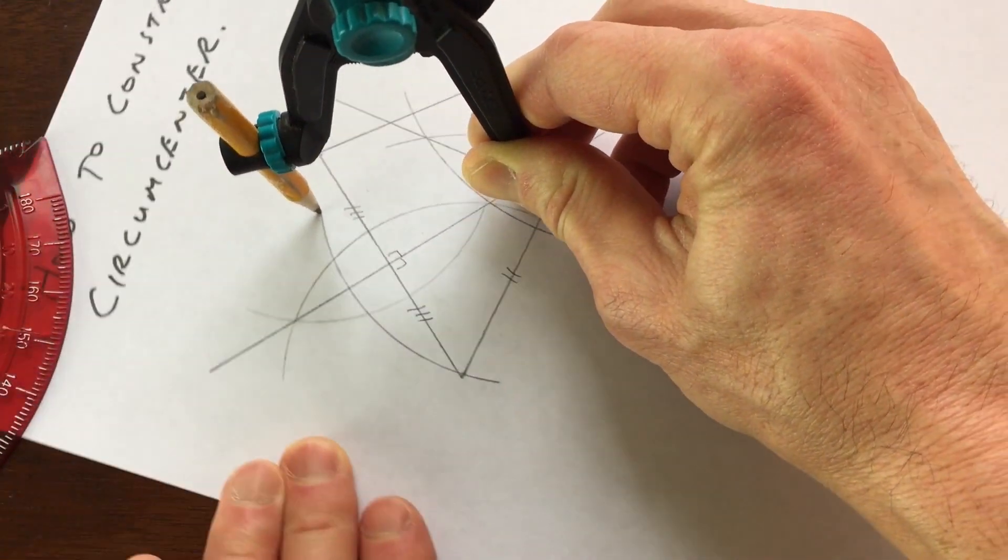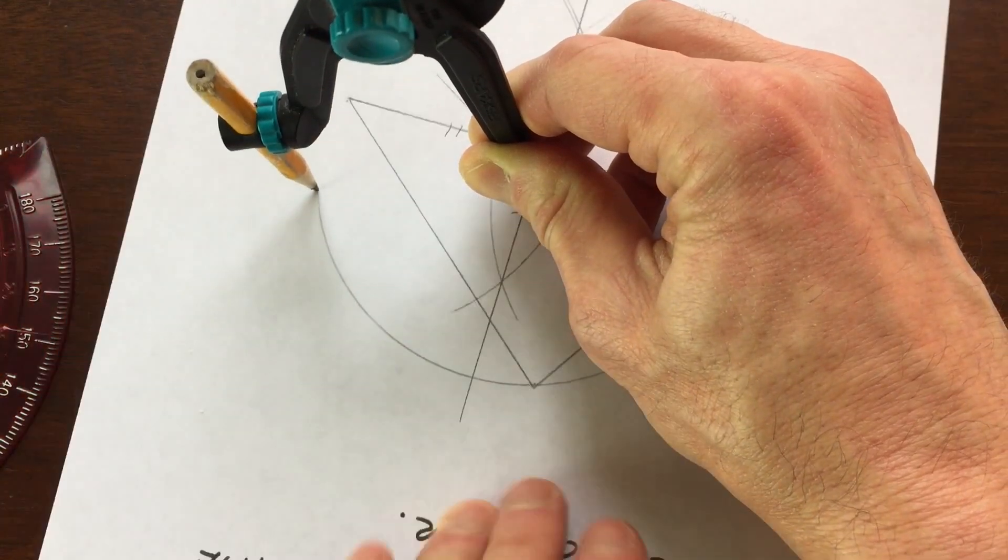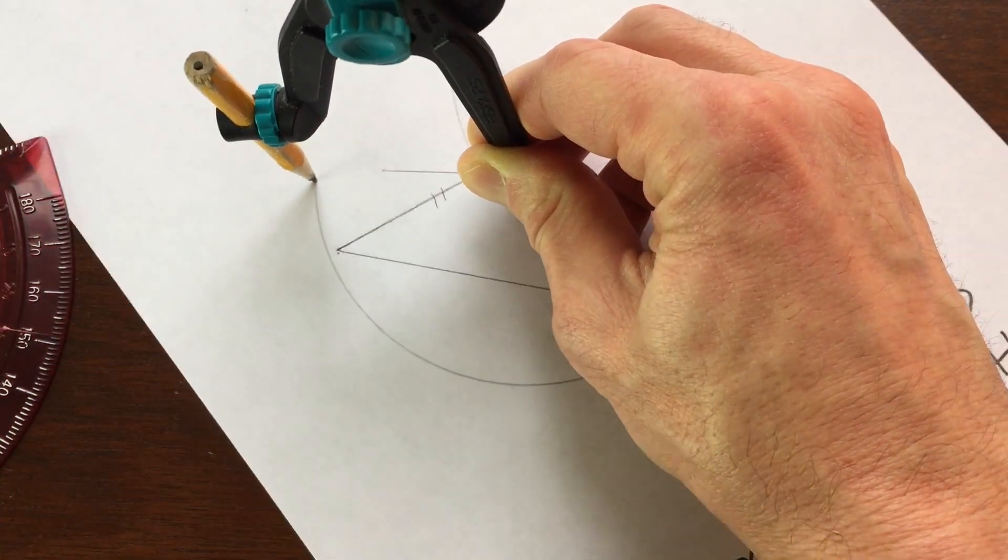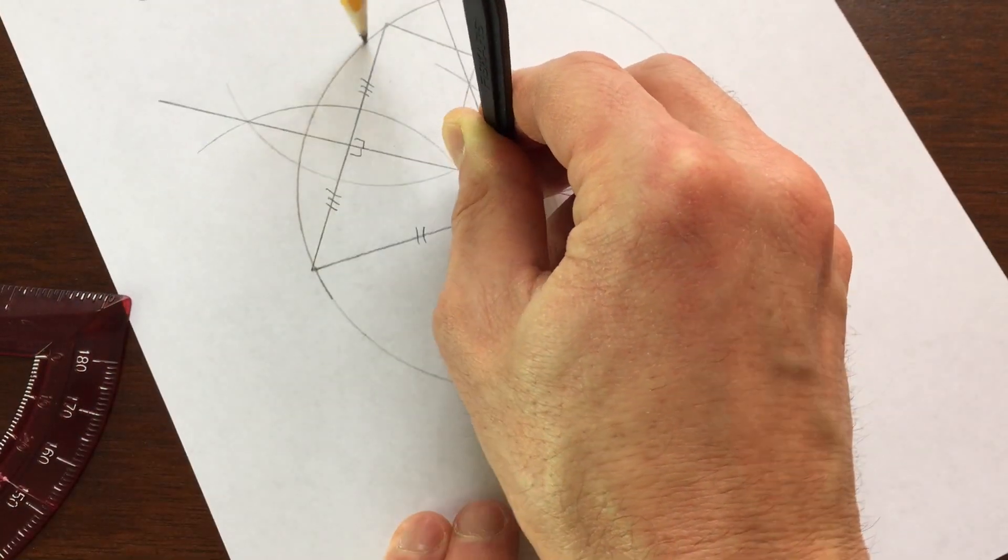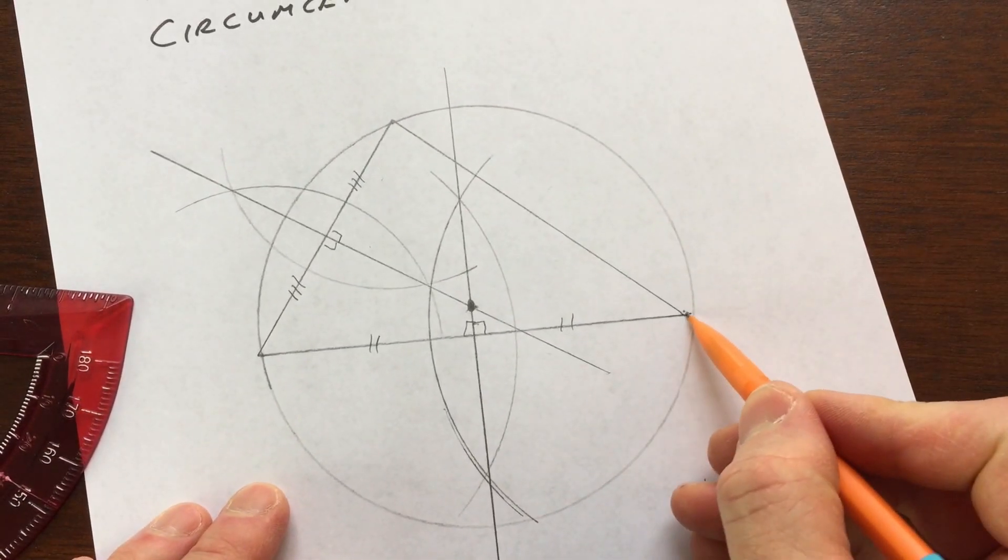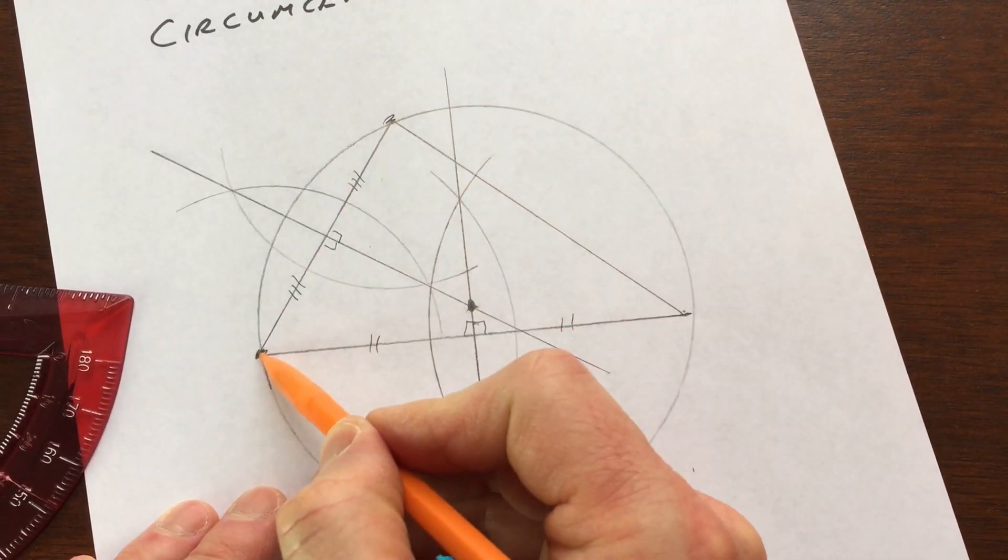So if we were to draw a circle around the triangle, what's going to happen is it's just going to just barely touch the edge of the circle.